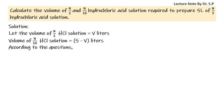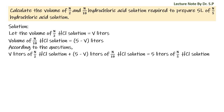According to the question: V liters of N/2 hydrochloric acid solution plus (5 minus V) liters of N/10 hydrochloric acid solution is equal to 5 liters of N/5 hydrochloric acid solution. Therefore, V × (N/2) + (5 minus V) × (N/10) is equal to 5 × (N/5).